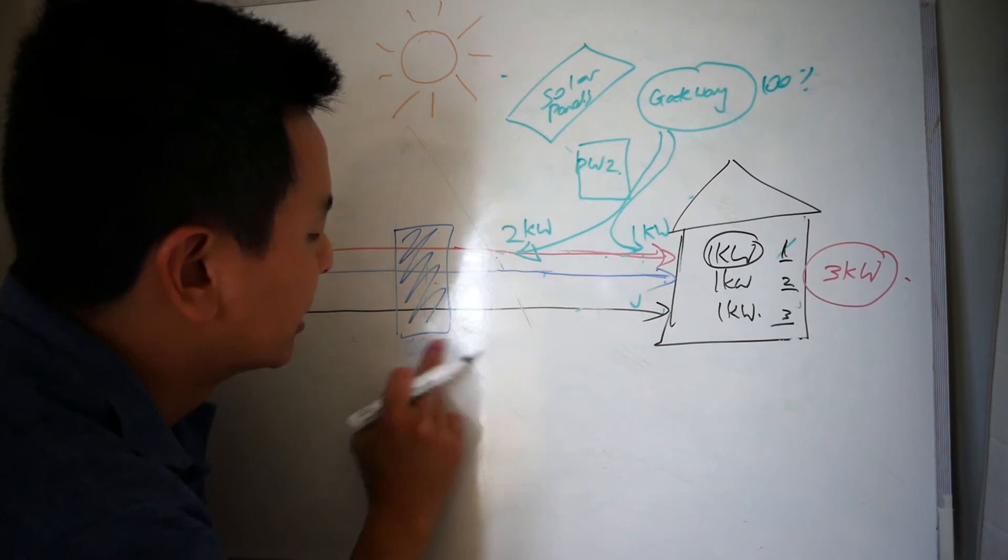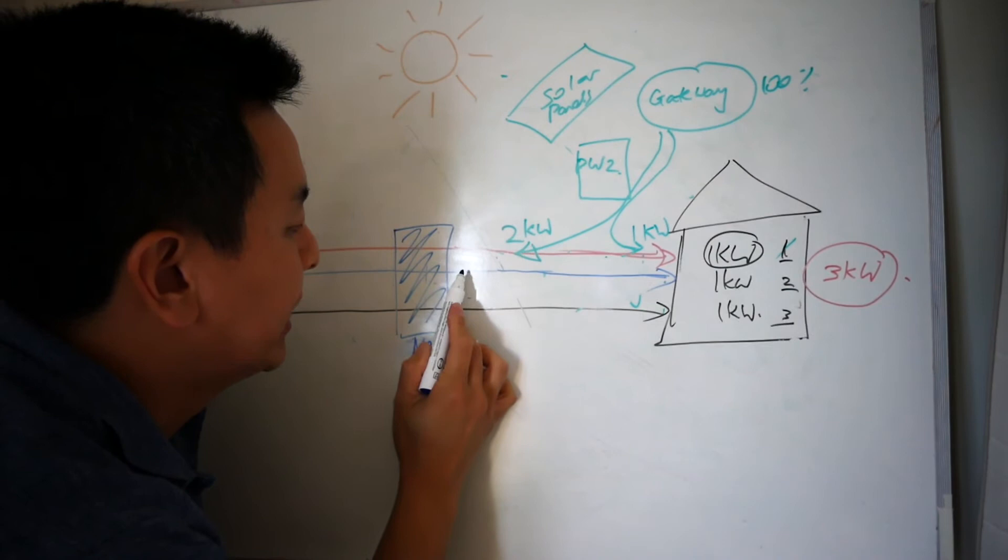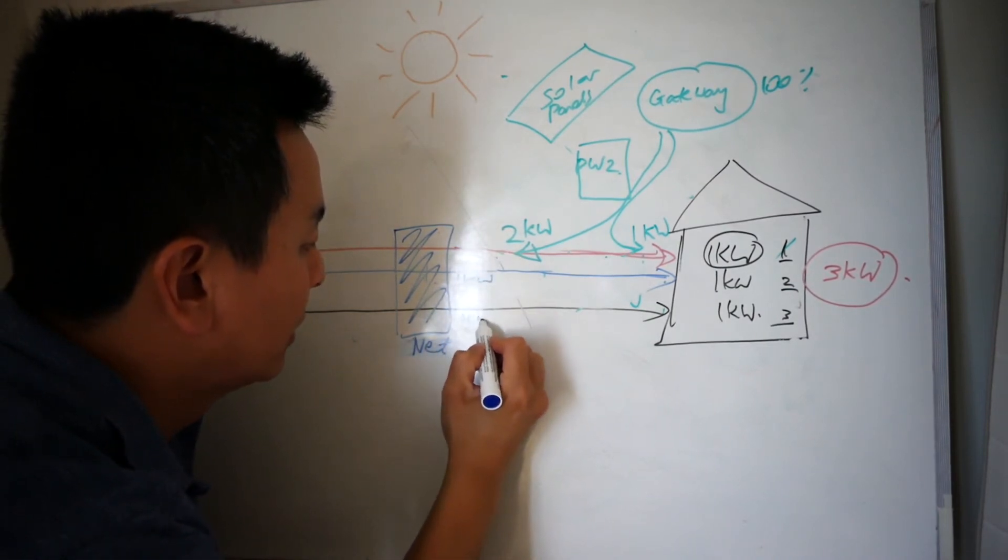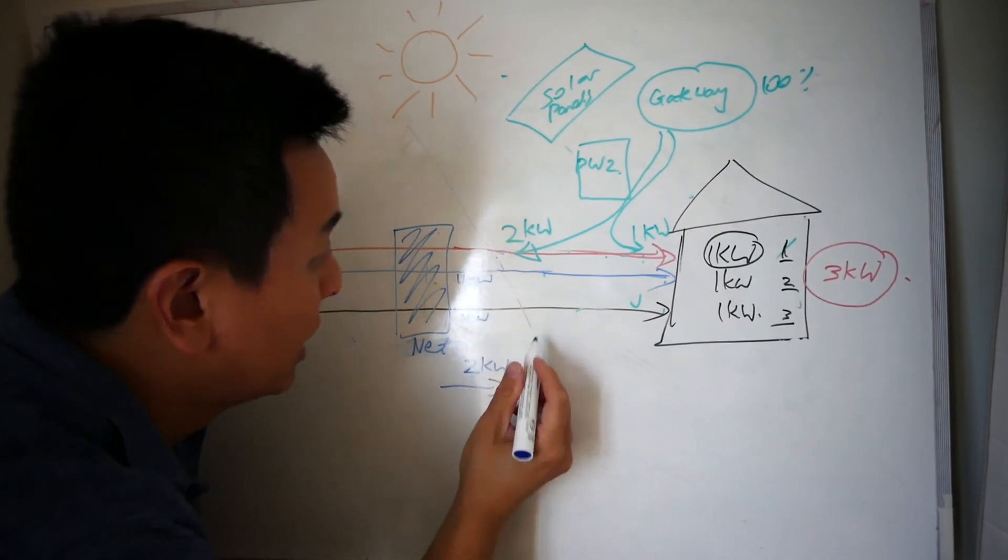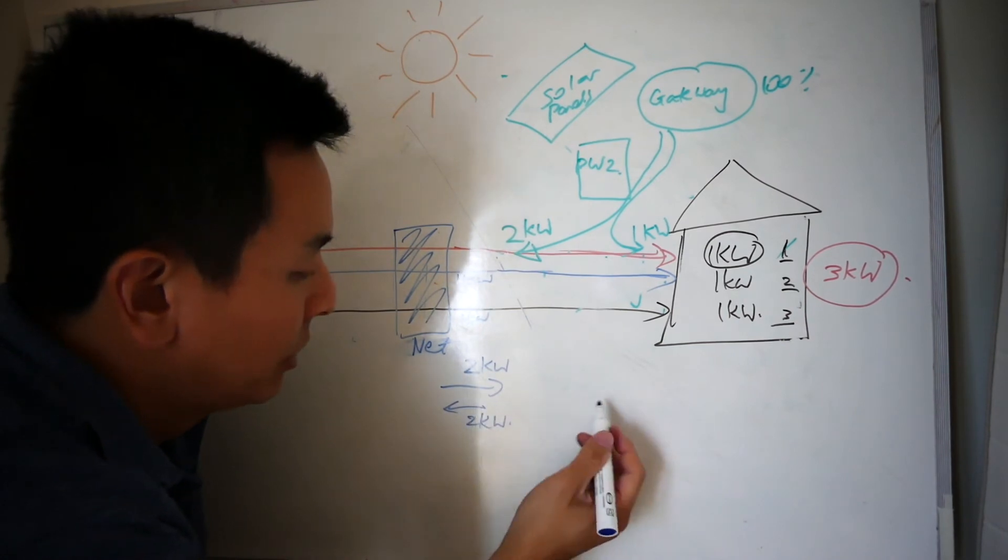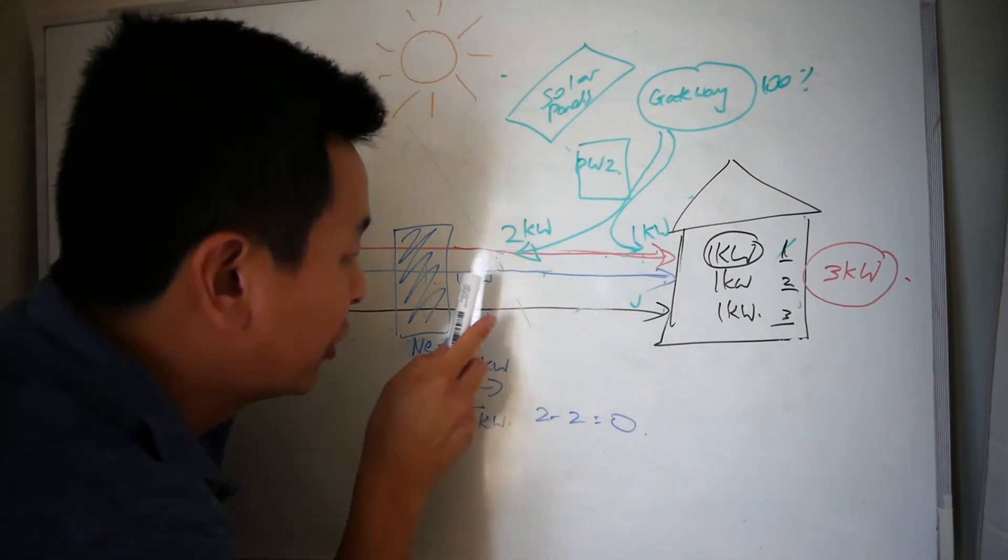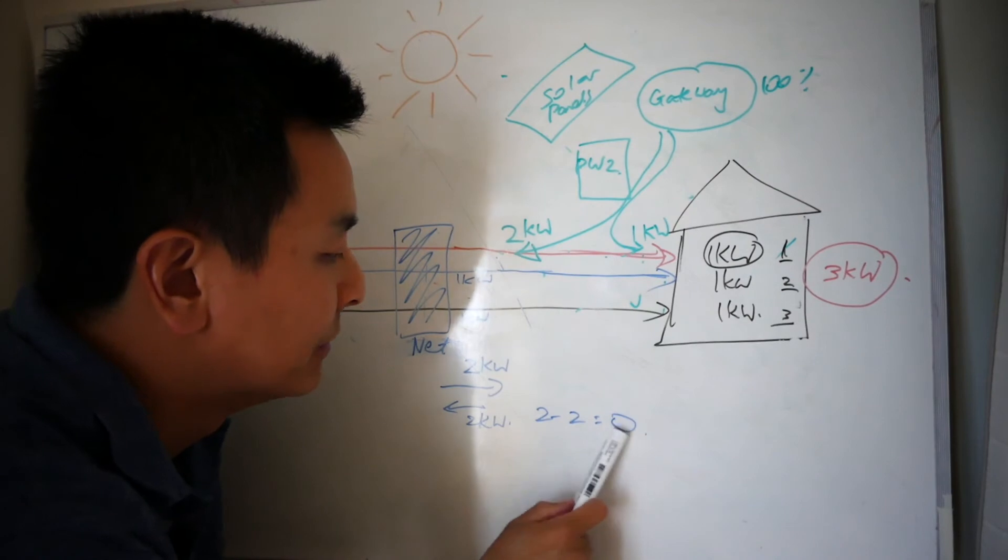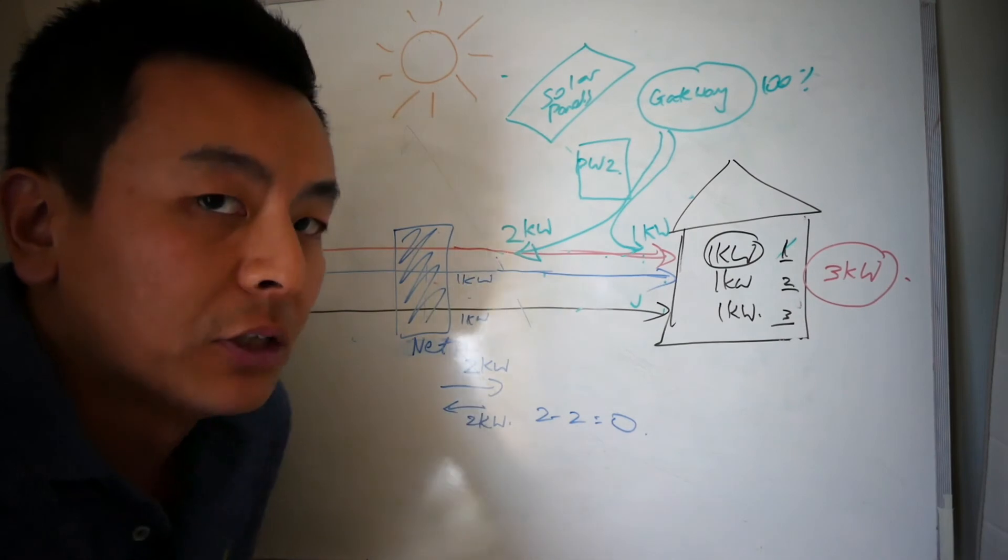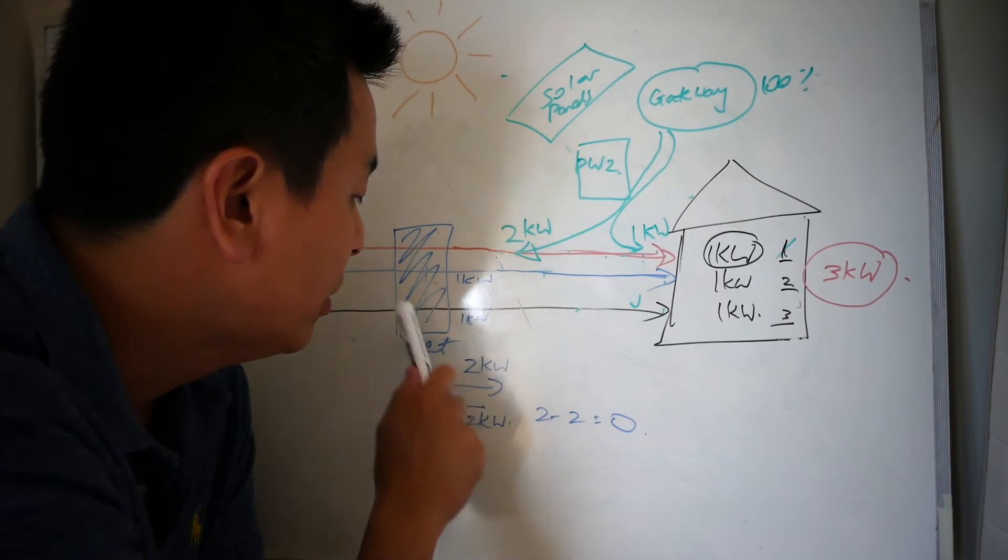So the net meter does this. So on these two phases here, on the blue phase and the black phase, it's supplying one kilowatt. So there's two kilowatts going this way, but there's also two kilowatts going back this way from the Powerwall 2. Two minus two, zero. So effectively, even though electricity is coming from here, on your bill, it'll be zero because the net meter goes, okay, two minus two, two going this way, two going back this way. Let's not bill this customer at all. So that's how the gateway works with a three-phase home with a net meter. Obviously that's not going to work with a gross meter. It just wouldn't work. You'd just be paying too much. You'd be paying for the grid usage and then getting a crappy feed-in tariff, which means you'll be getting charged for electricity, which has been covered already by the Powerwall 2.